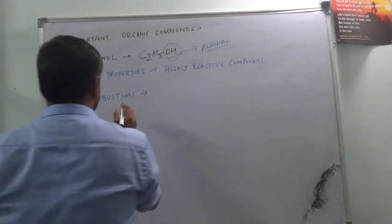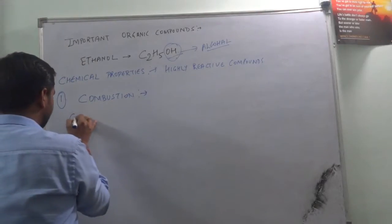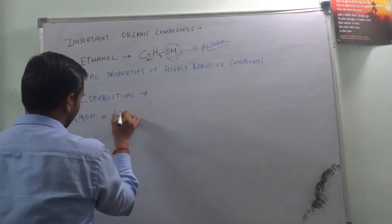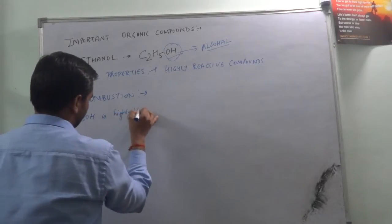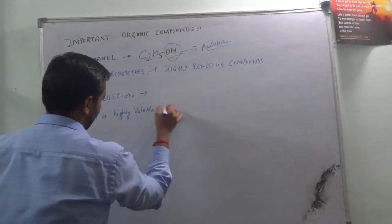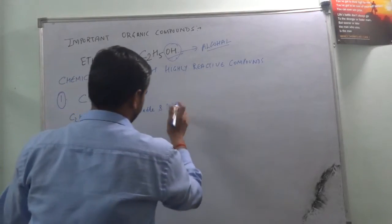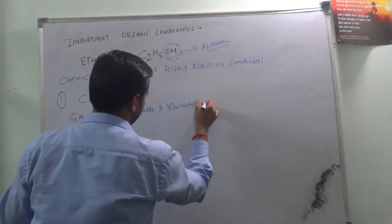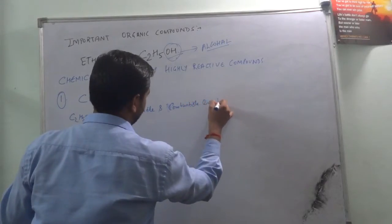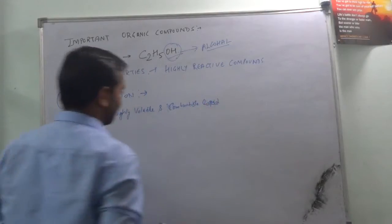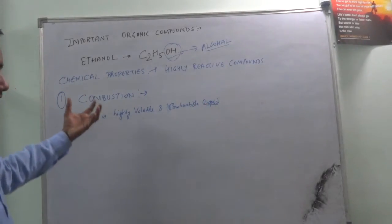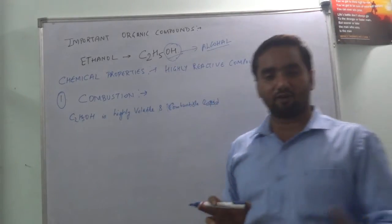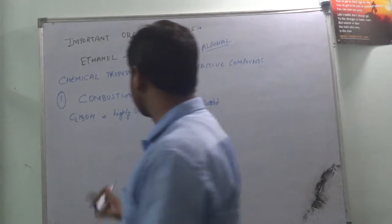Ethanol, C2H5OH, is highly volatile and combustible. Combustible means it easily undergoes combustion — it catches fire when it comes in contact with air or oxygen.